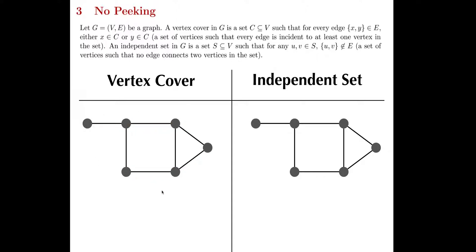Here's another vertex cover. And trivially, if you don't even want to think about how you're selecting the vertices, you could just select all the vertices and that's guaranteed to be a vertex cover. Now let's switch over to what an independent set is. An independent set is also a subset of the vertices, except you want to pick vertices such that no vertices in your independent set are connected via an edge.